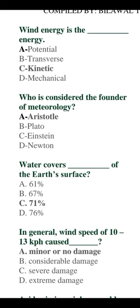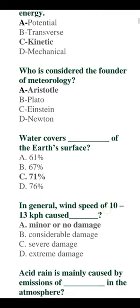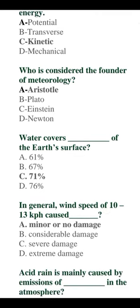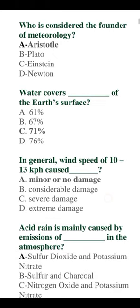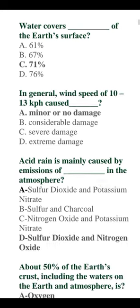The founder of meteorology is considered to be Aristotle. Water covers 71% of the Earth's surface; 29% is land area. In general, wind speed of 10 to 13 kph causes minor or no damage.